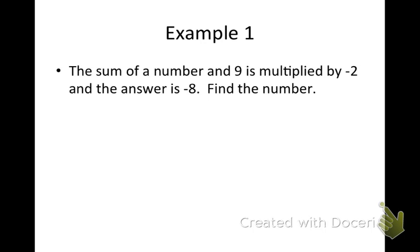So for the first example, the sum of a number and 9 is multiplied by negative 2, and the answer is negative 8. We want to start out all of the word problems by identifying the variable. Since what we're looking for, and usually the question is stated last, find the number, we're looking for n, which is the number that would make this true.